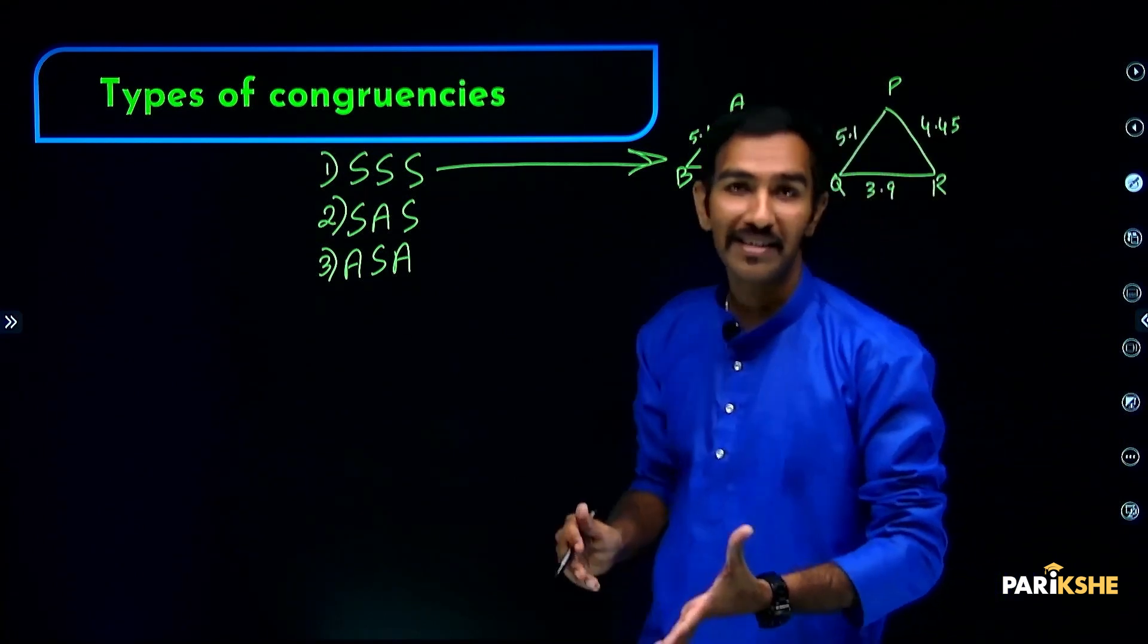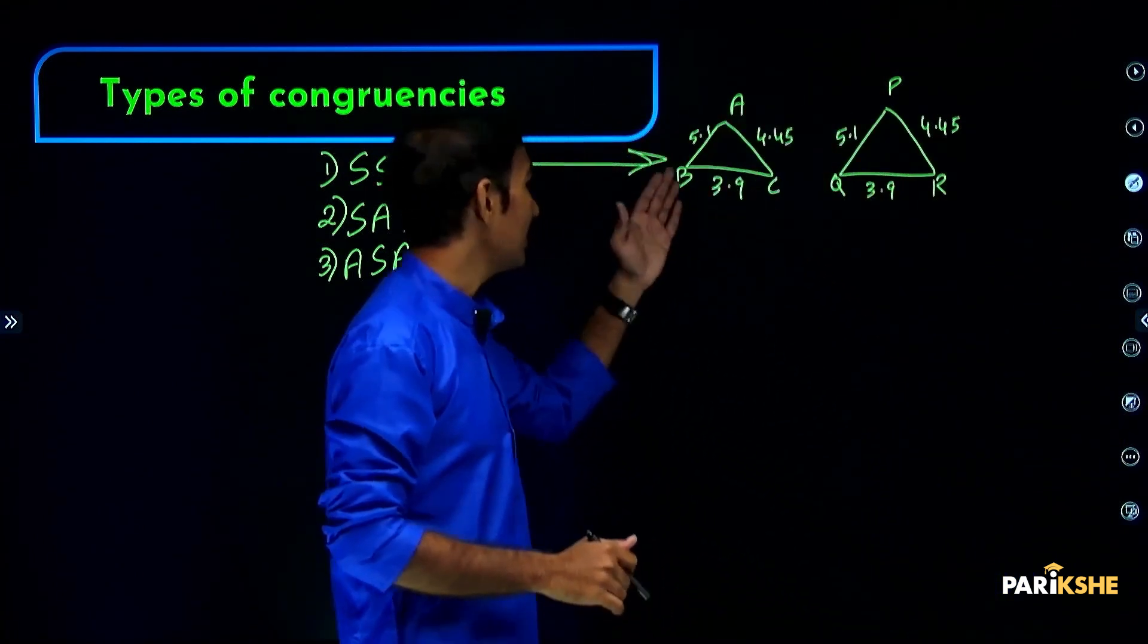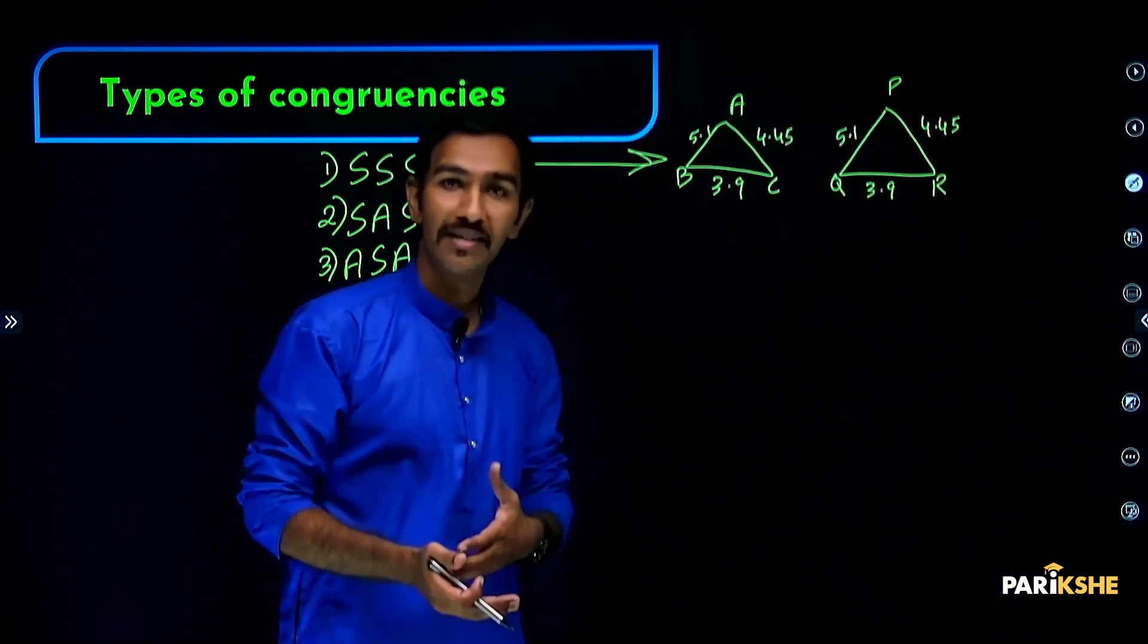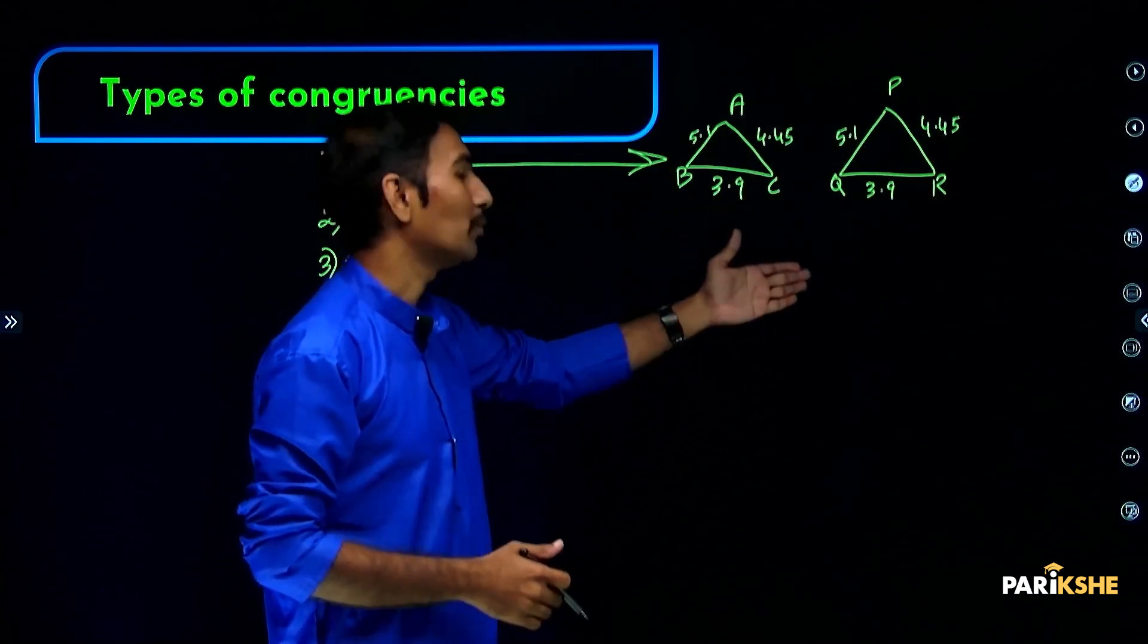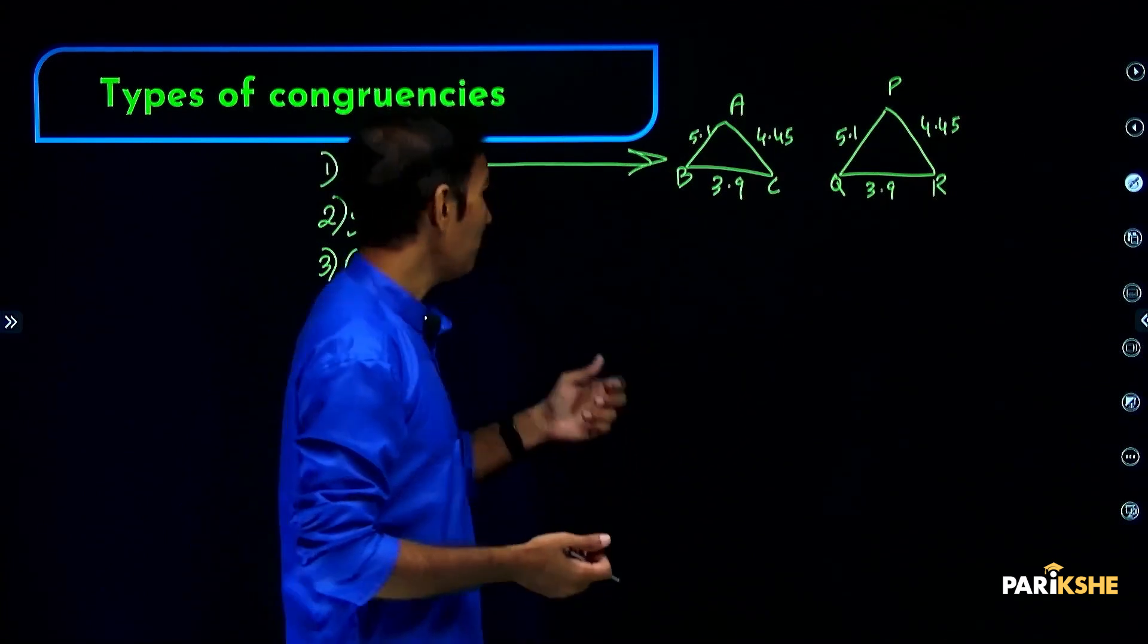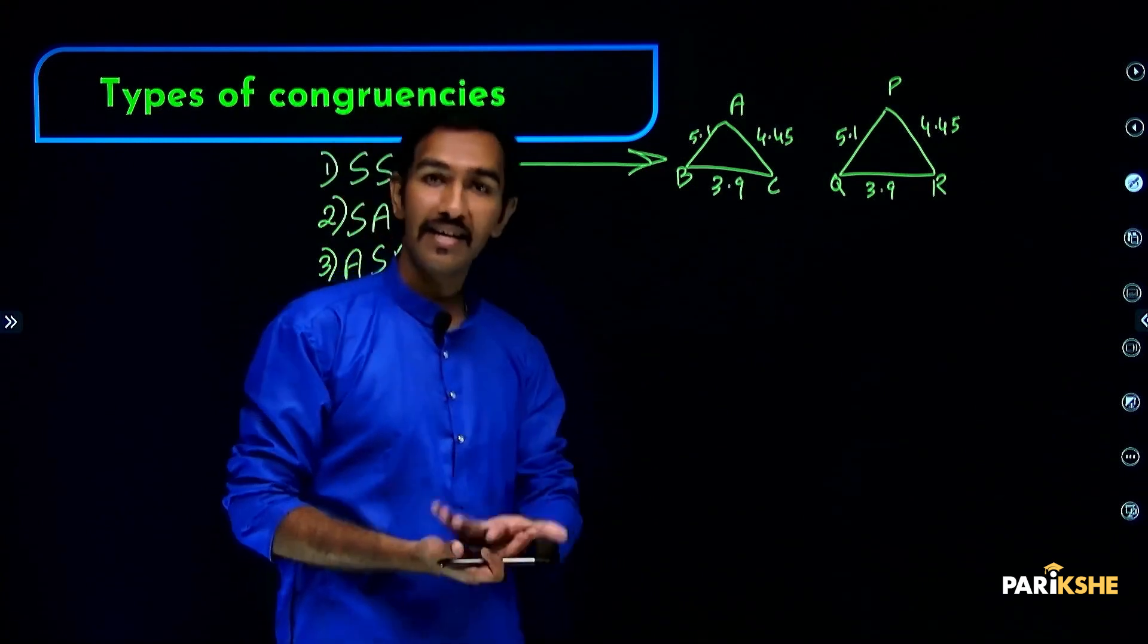If these measurements are the same here also, then PQ becomes 5.1 cm, QR becomes 3.9 cm, PR becomes 4.45 cm.